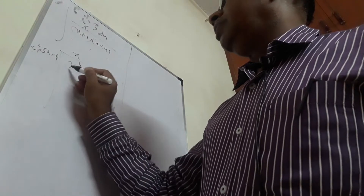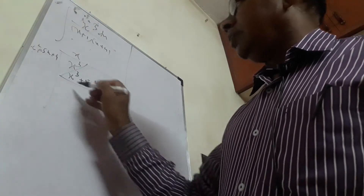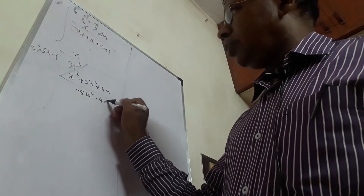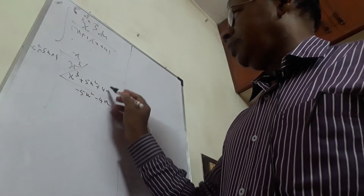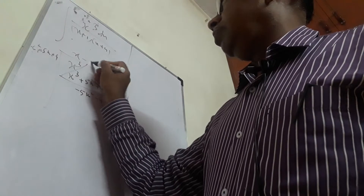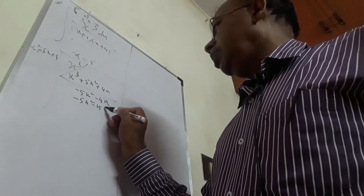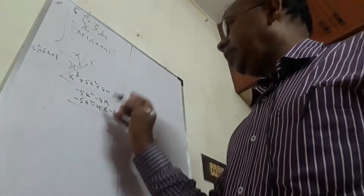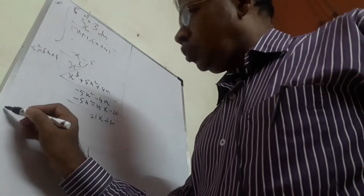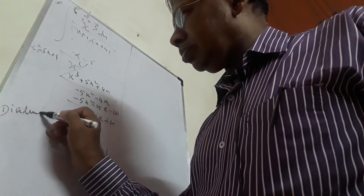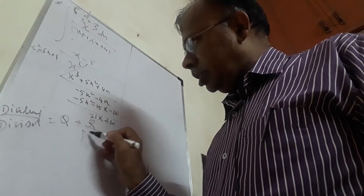After subtraction, this is reduced to −5x² − 4x. Then −5x² divided by x² is −5. Multiplying: −5(x² + 5x + 4) gives −5x² − 25x − 20. While subtracting, the remainder is 21x + 20. Using the rule: dividend/divisor = quotient + remainder/divisor.